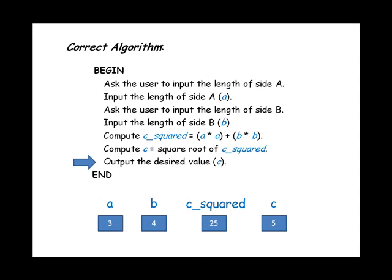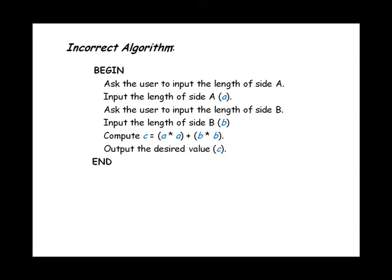But what would an incorrect algorithm look like? Here's an example of an incorrect algorithm, something that if we were to walk through it with a desk check, we would recognize as being wrong, in other words producing the wrong result.